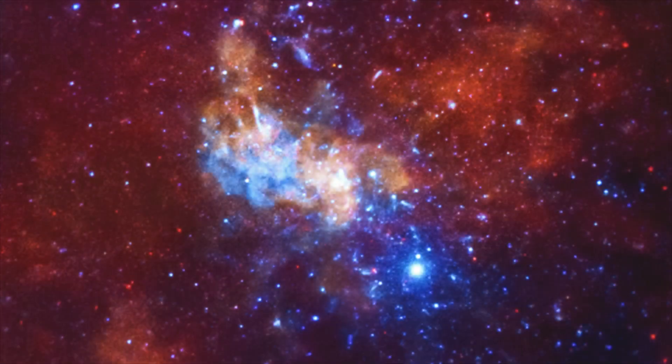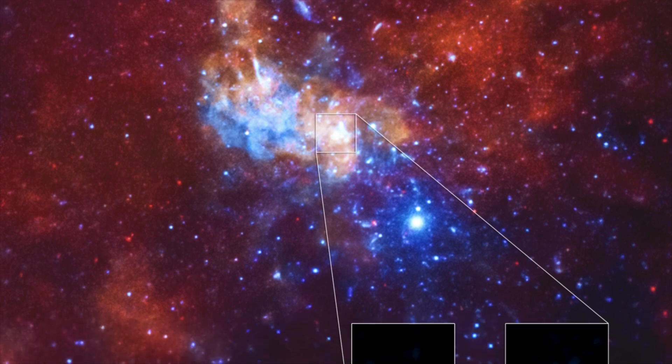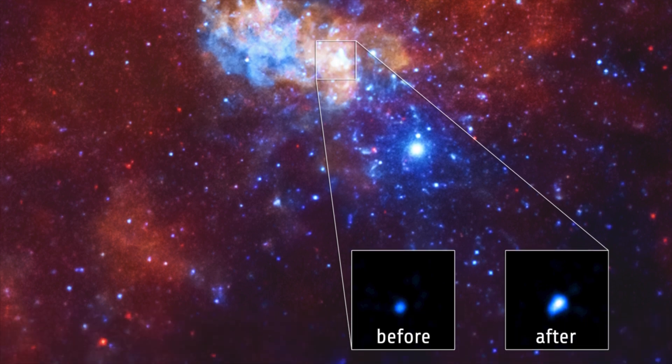The main part of this picture shows the area around the supermassive black hole at the center of our galaxy, called Sagittarius A star. Here we see a close-up of the black hole and the giant flare from 2013.